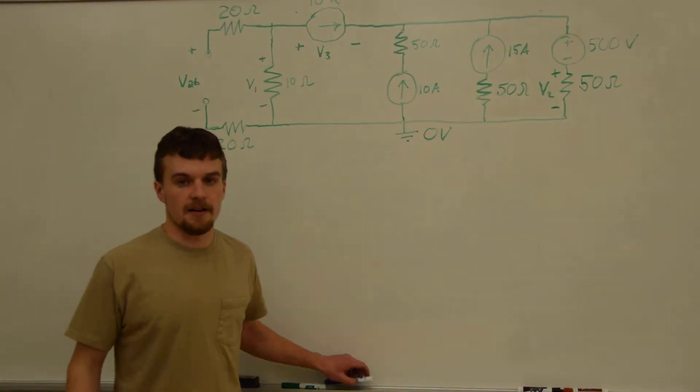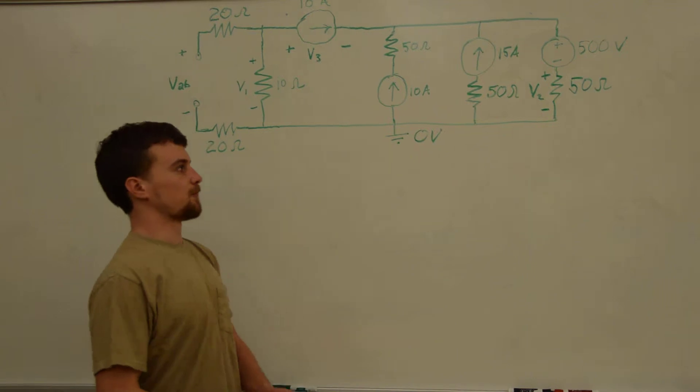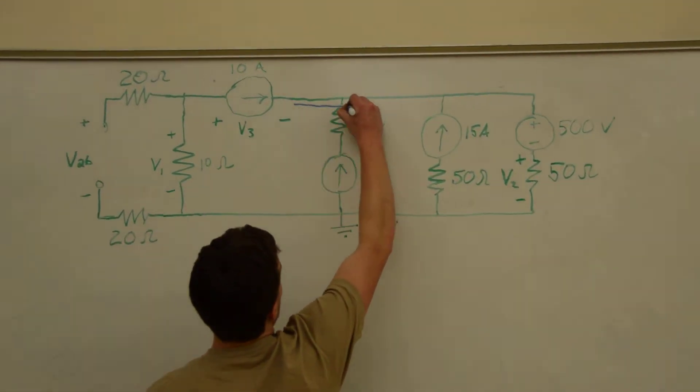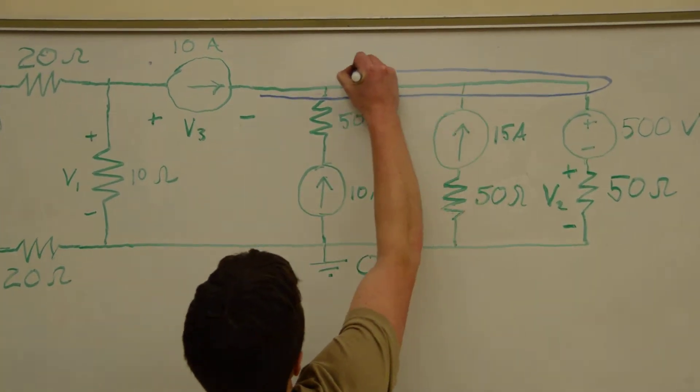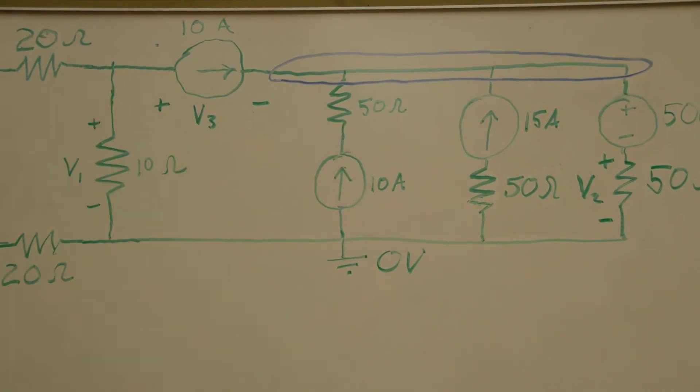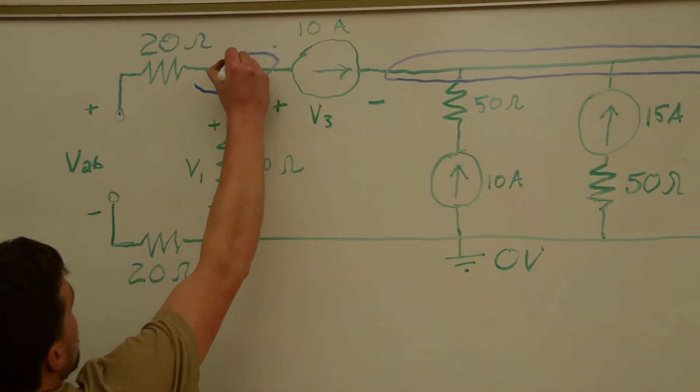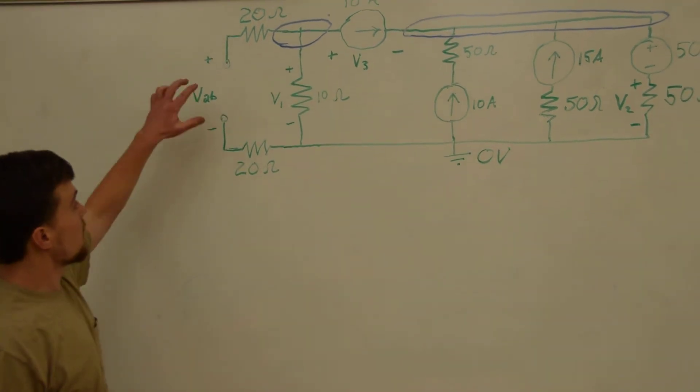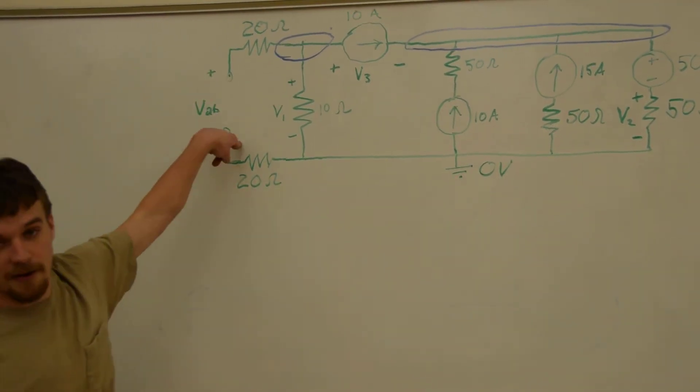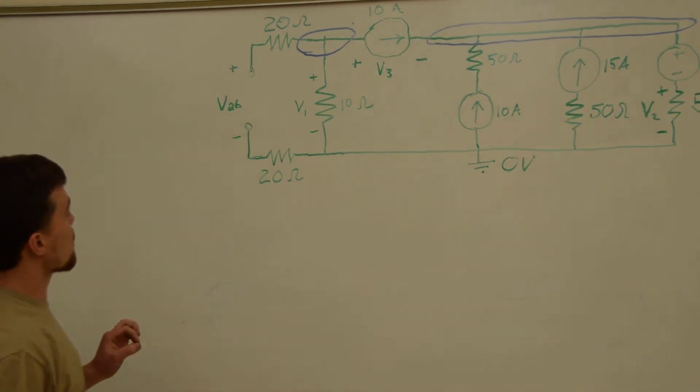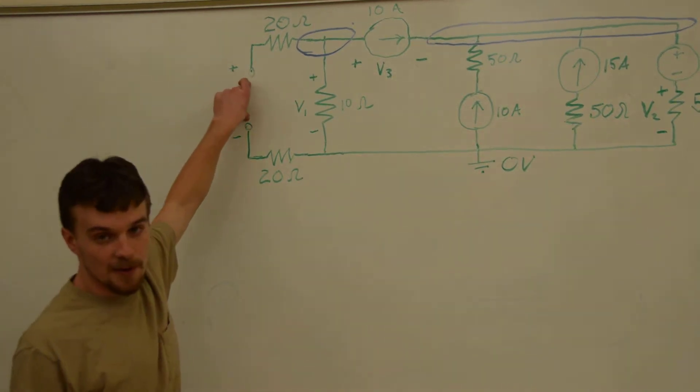Now we need to find any other nodes in the circuit. If we look up here we have this node. If we look here, this is a node, and we might want to say that this and this are nodes, but if you step back and look, this is an open circuit.